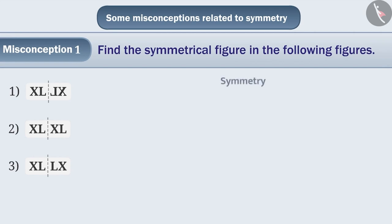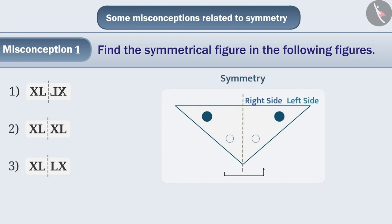Children do not understand symmetry correctly. They do not understand that two such parts of a symmetrical shape can be made that they meet each other perfectly. By considering the dotted line as a mirror line, they do not see whether the shape of the figure is properly presented in the mirror following lateral inversion.